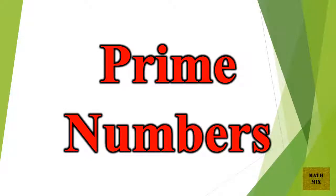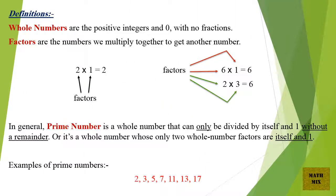Prime Numbers. Definitions: Whole numbers are the positive integers and 0, with no fractions. Factors are the numbers we multiply together to get another number.